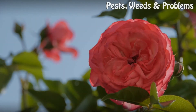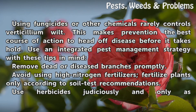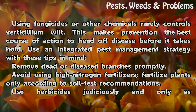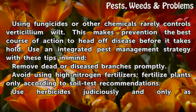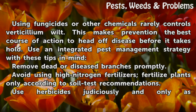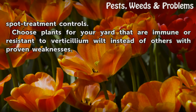Prevention. Using fungicides or other chemicals rarely controls verticillium wilt. This makes prevention the best course of action to head off disease before it takes hold. Use an integrated pest management strategy, with these tips in mind: remove dead or diseased branches promptly, avoid using high nitrogen fertilizers, fertilize plants only according to soil test recommendations, and use herbicides judiciously and only as spot treatment controls.